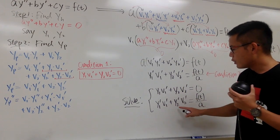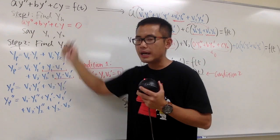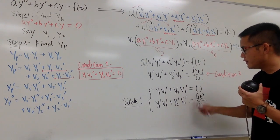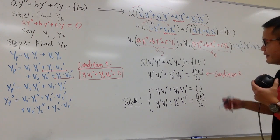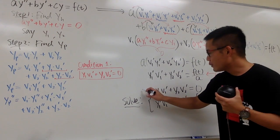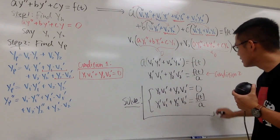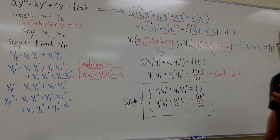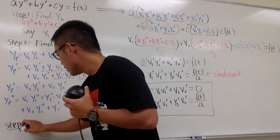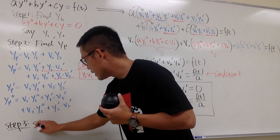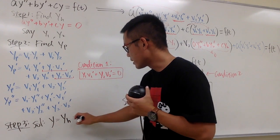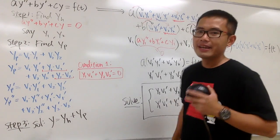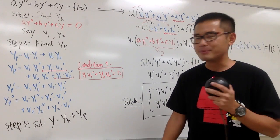So the variational parameter method comes down to two steps: find yh, then solve the system of two conditions for v1' and v2', integrate to obtain v1 and v2, and form yp = v1·y1 + v2·y2. The overall solution is y = yh + yp, which is the solution to the original differential equation. Watch the next video for a worked example using this method.